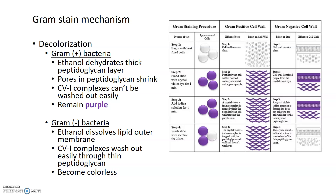The next step is where you start to differentiate between gram positive and gram negative cells — decolorization is the most important step in the gram stain procedure, and it is very important to decolorize for the right amount of time. For gram positive bacteria, the ethanol dehydrates the very thick layer of peptidoglycan that makes up the gram positive cell wall, and it shrinks the pores inside that peptidoglycan that molecules can usually diffuse through. This means the crystal violet iodine complexes cannot get washed out, so a gram positive cell stays purple even after decolorization.